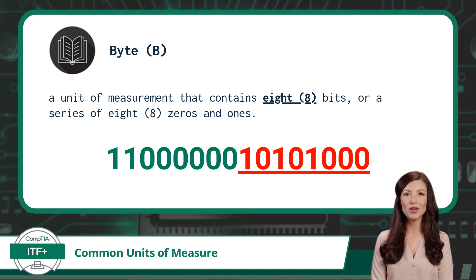It is also important to note that a bit is represented with a lowercase b, while a byte is represented with an uppercase B. Get these two measures confused and you will be off by a factor of 8.